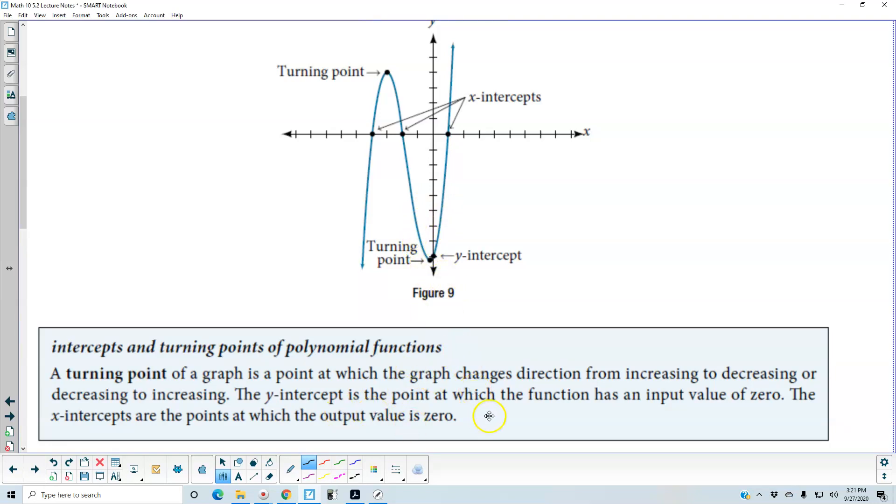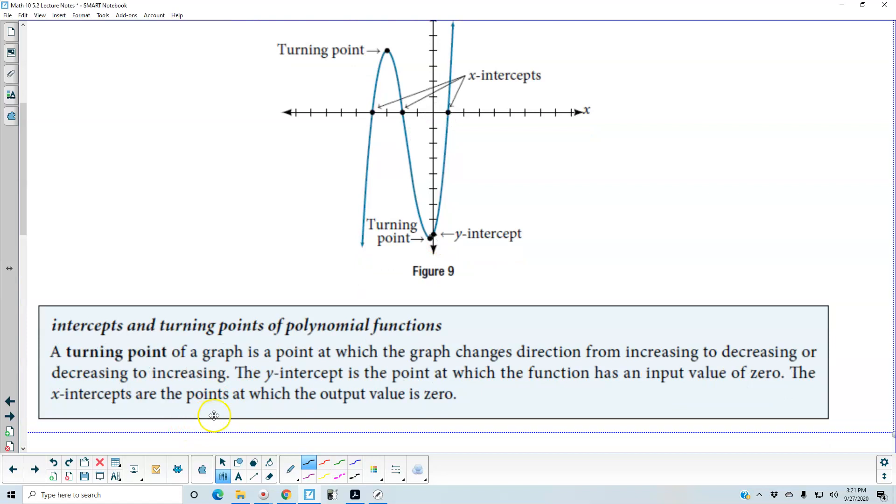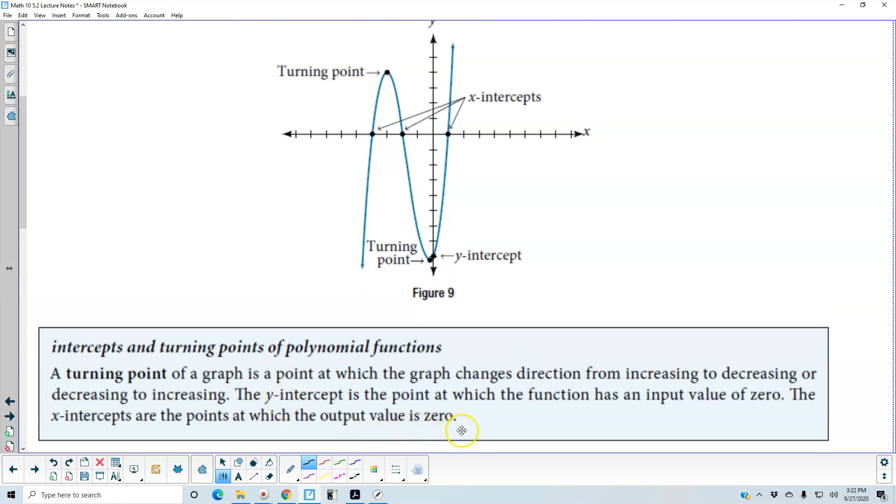The y-intercept is the point at which the function has an input value of zero, and the x-intercepts are the points at which the output value is zero.